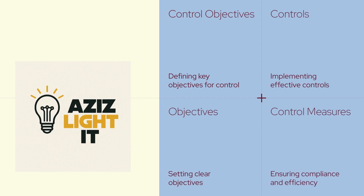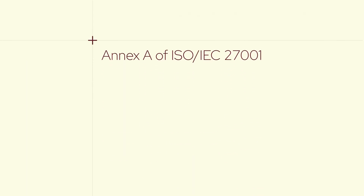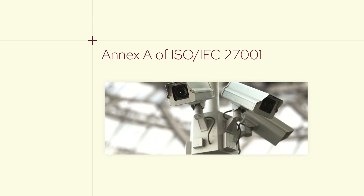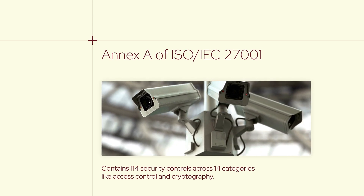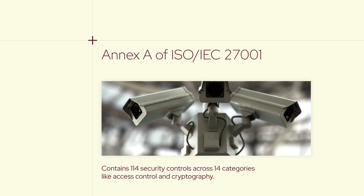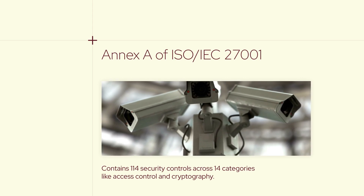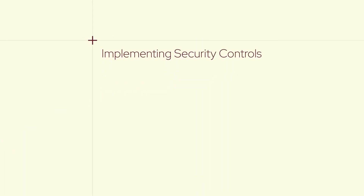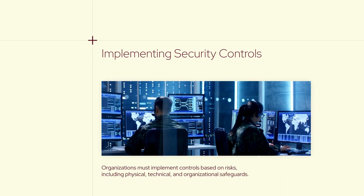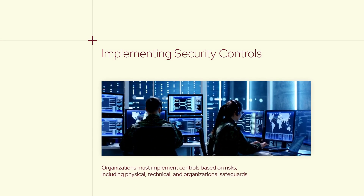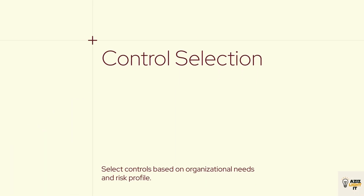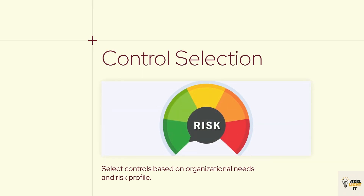Control Objectives and Controls. Annex A of ISO IEC 27001 contains a list of 114 security controls grouped into 14 control categories, such as access control, asset management, cryptography, physical security, and others. Organizations are required to implement a set of controls based on the identified risks, including physical, technical, and organizational safeguards. The selection of controls must be based on the specific needs of the organization, its risk profile, and its business environment.